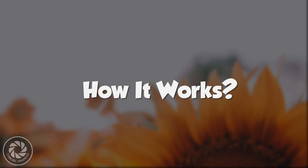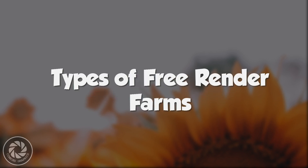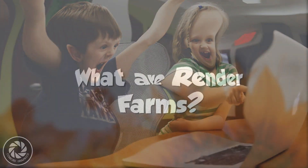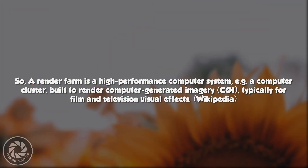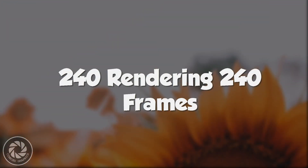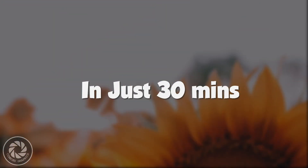Some of you are probably thinking: what are free render farms, how do they work, why are they necessary, and how many types are there? I am going to answer all of these questions in this video. According to Wikipedia, a render farm is a high-performance computer system built to render CGI, typically for film and television visual effects. It works as a group of computers rendering animation at the same time. So if your computer takes 30 minutes for one frame, 240 computers rendering simultaneously will finish your project in just 30 minutes.